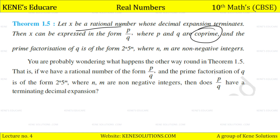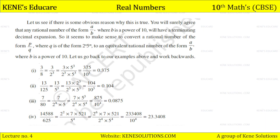You are probably wondering what happens the other way round in Theorem 1.5 — that is, if we have a rational number p by q and the prime factorization of q is of the form 2 to the power n × 5 to the power m, where n and m are non-negative integers, then does p upon q have a terminating decimal expansion? Any rational number of the form a upon b, where b is a power of 10, will have a terminating decimal expansion. So it makes sense to convert p by q, where q = 2^n × 5^m, to an equivalent form a upon b.